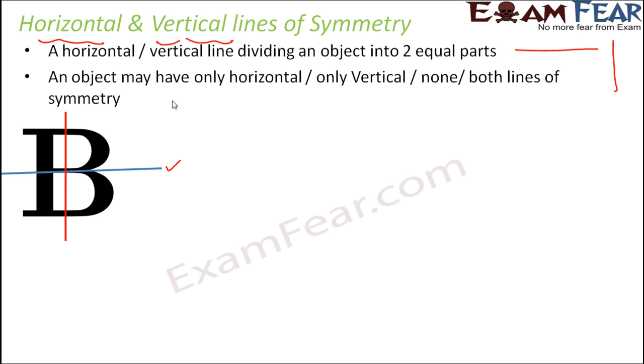So this half looks like this. The other half looks like this. So they are definitely not identical. Therefore, this is not a line of symmetry. So the alphabet B has only horizontal line of symmetry.